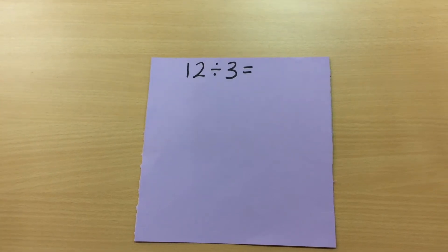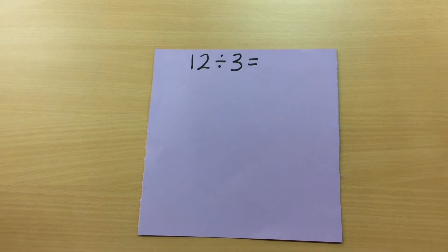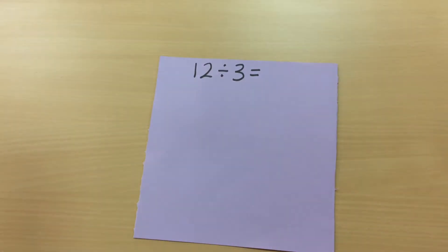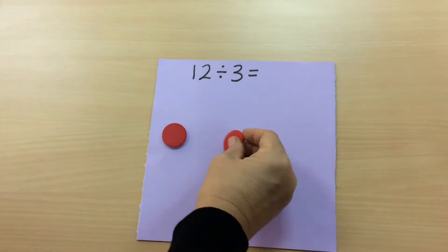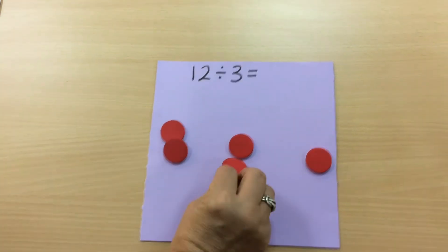Division in year two moves on from sharing things out and putting things into groups. So for example, in year one, 12 divided by 3, we would have put them into three different groups and shared them out equally until we'd found our answer.